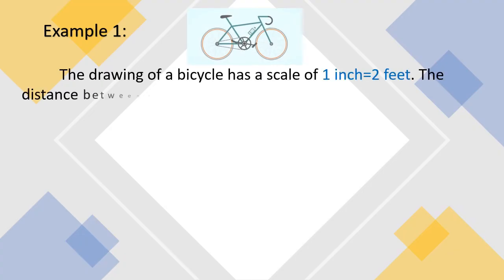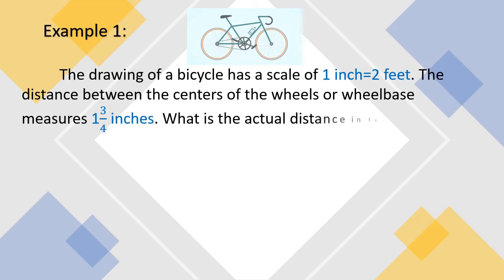Let's have this example number one. The drawing of a bicycle has a scale of 1 inch to 2 feet. The distance between the centers of the wheels or wheelbase measures 1 and 3 fourths inches. What is the actual distance in feet?